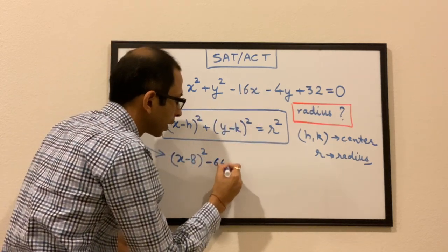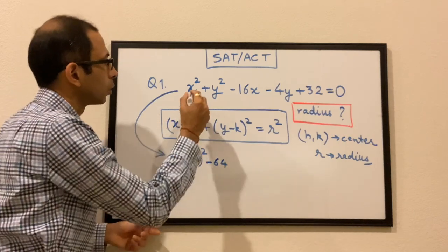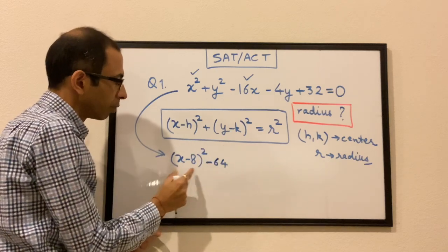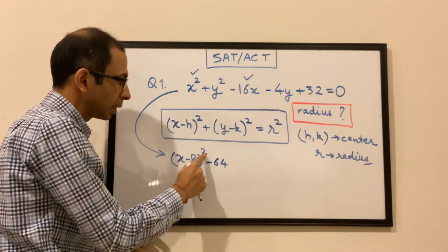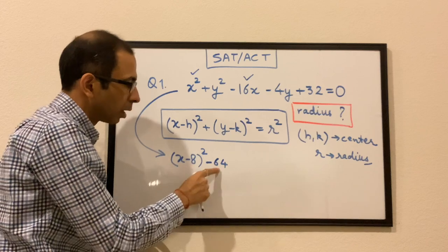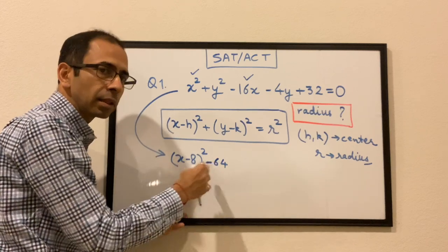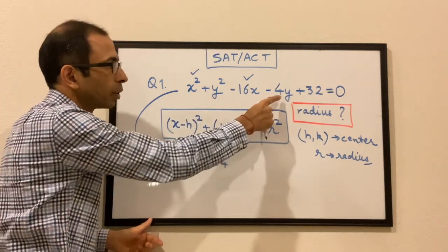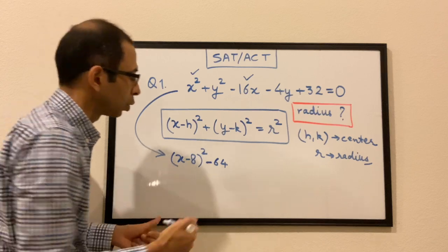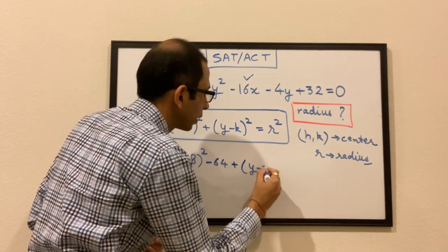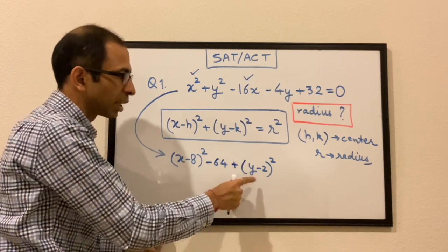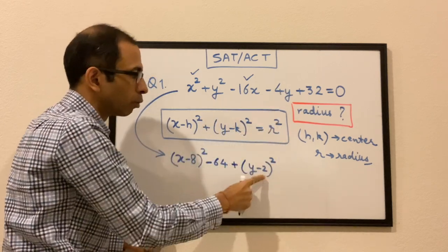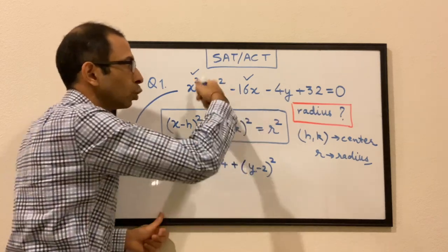We negate that extra 64 by writing minus 64. So we get x² − 16x + 64 − 64, which nullifies. Now we do the same for the y-terms: coefficient of y divided by 2 gives −2, so we write (y − 2)². Expanding gives y² − 4y plus an extra 4, which we negate with minus 4.